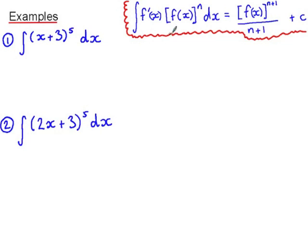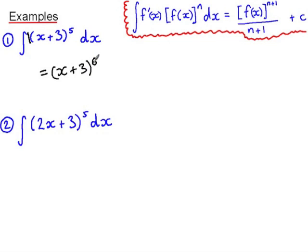We'll work through several examples so you can see this formula in action. As always, pause the video and try the examples yourself before watching my solution. In example 1, we want the integral of (x+3)^5 with respect to x. So f(x) is x+3, the derivative of f(x) is 1 — so that doesn't change the expression — and n is 5. Using the formula, this is (x+3)^6 all over 6, plus c.